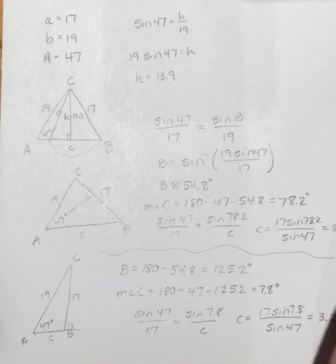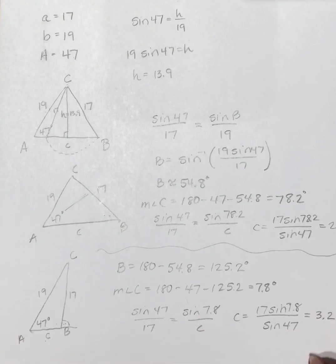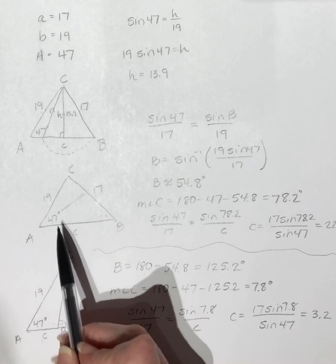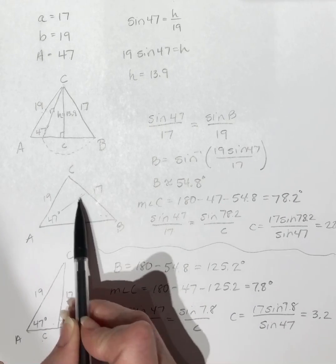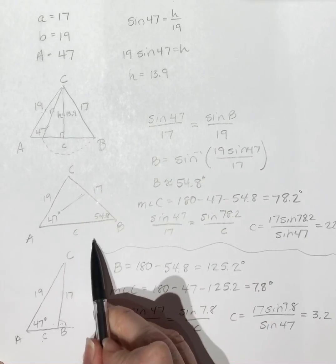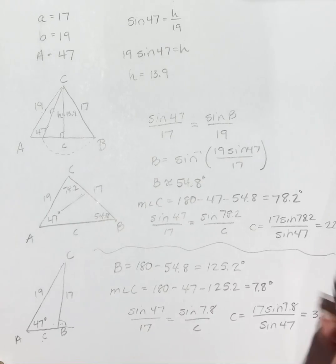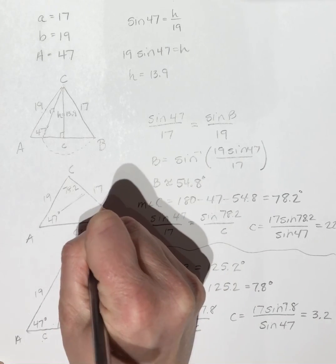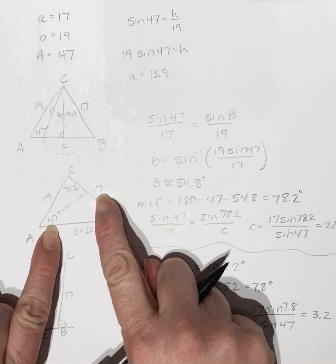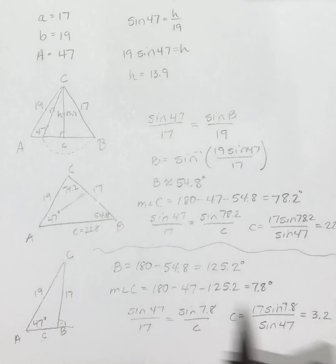So double-check all my answers. I have here angle B was 54.8, angle C was 78.2, side c is 22.8. So smallest angle, smallest side; largest angle, largest side. Looks good.